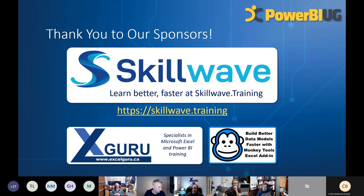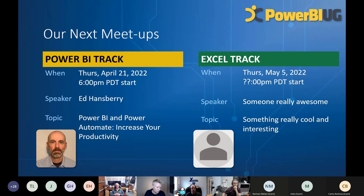Excel Guru is my company, a parent company of Skill Wave, which also provides the Monkey Tools add-in — it can help you build better business intelligence models faster with Power Query and Power Pivot, and connect to your Power BI models. Our next Power BI track meetup is April 21st — Ed Hansbury is coming back to talk about Power BI and Power Automate (or Flow, if you prefer), showing us how to increase productivity.